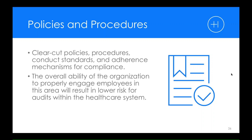Number nine is policies and procedures. This is something you never get enough of, really, as far as needing to have them. But are they clear-cut? Are they policies and procedures that deal with conduct standards — not just a policy and a procedure — and is there a mechanism for people to be aware that they need to follow those guidelines, with consequences when they do not? The overall ability of the organization to manage and engage their employees with that will lower the risk of audits within the healthcare system. This should be something that is ongoing, routine, and continues throughout the life of the organization — open-ended and never ending.